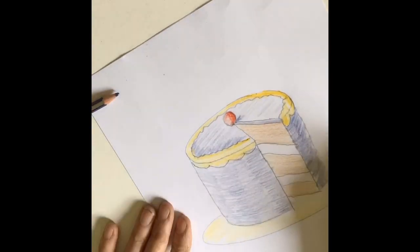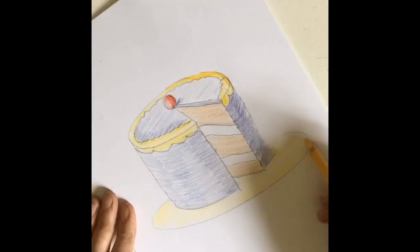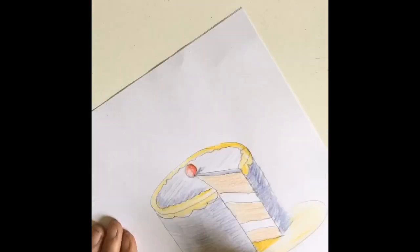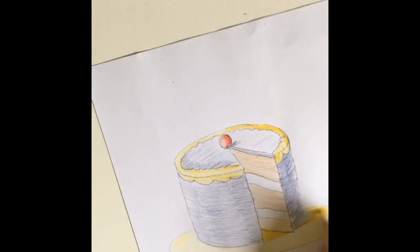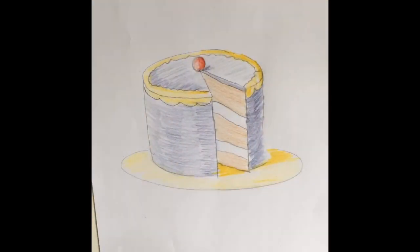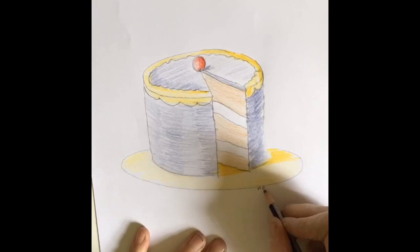I'm going to color in the plate. And when I color in the plate, I want to show the shadow that's created by the cake as well. So don't just color in one shade. Do a darker shade so that the cake looks solid. There you go. That was pretty good.